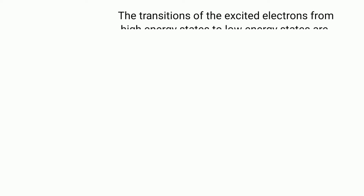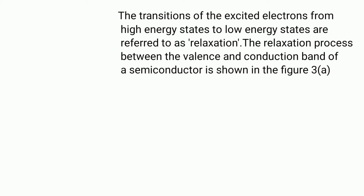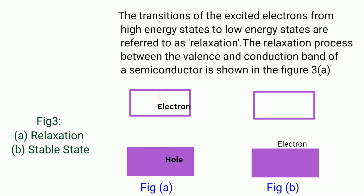The transitions of excited electrons from high energy states back to low energy states are referred to as relaxations. The excitation and relaxation processes between the valence band and the conduction band are shown in figures: excitation is shown in figure 2b and relaxation in figure 3a.